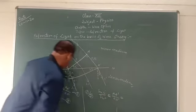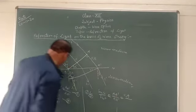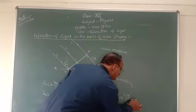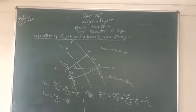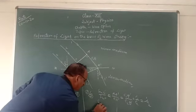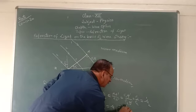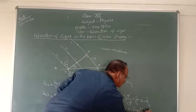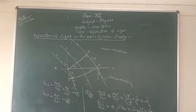AA' equals c1·t and BB' equals c2·t, so t cancels, giving sin i upon sin r equal to c1 upon c2. This is a constant, and this is Snell's law. In this way we can derive the laws of refraction on the basis of wave theory.